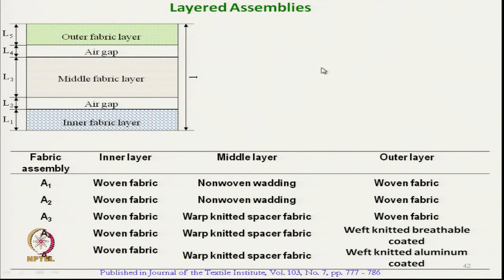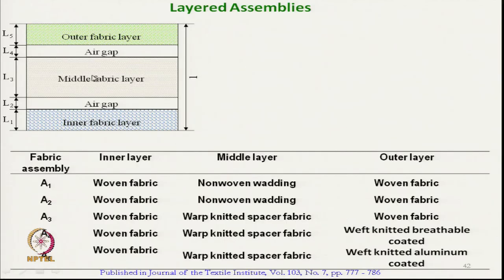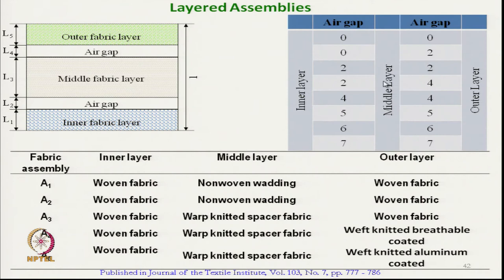There are three layers, as already discussed: outer layer, middle layer, and inner layer. Between the layers, air gaps were created — between the middle and outer layer, and between the inner and middle layer — using a metallic frame. These air gap thicknesses between layers were varied. A 0 thickness means there is no air gap; the two layers are in direct contact with each other.